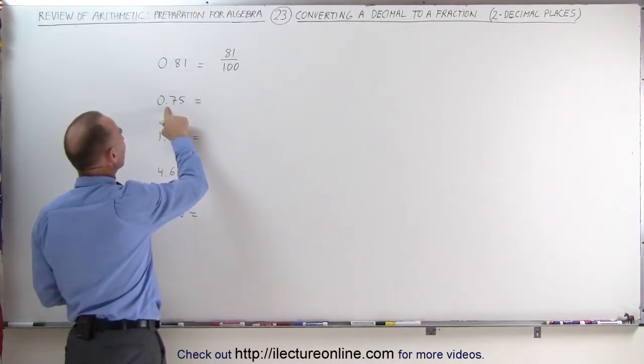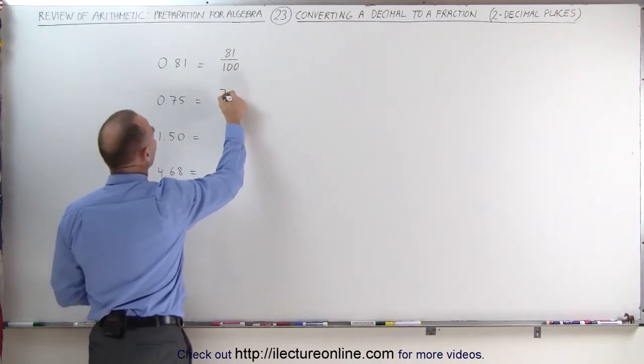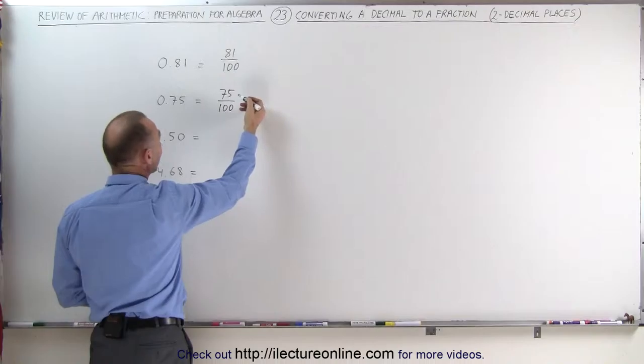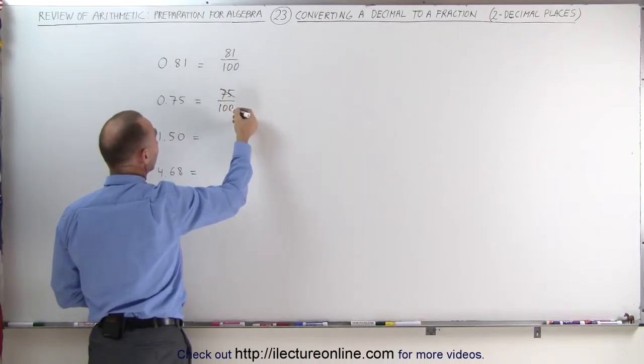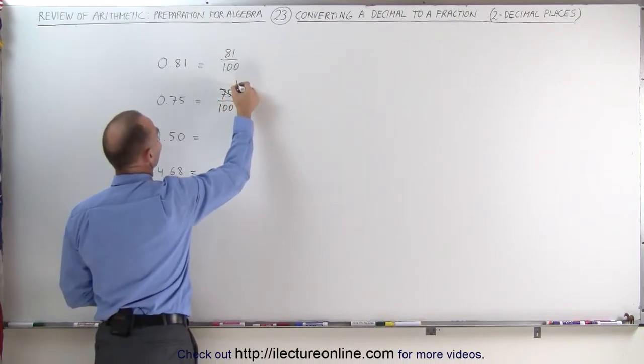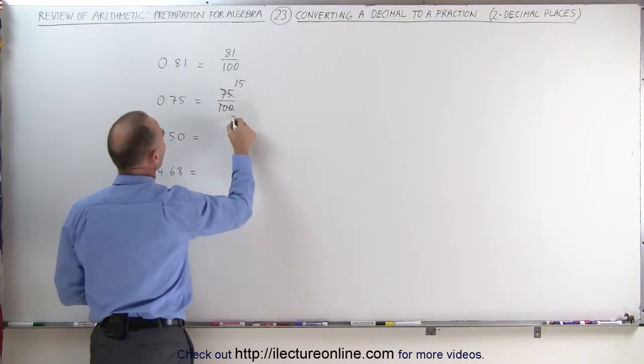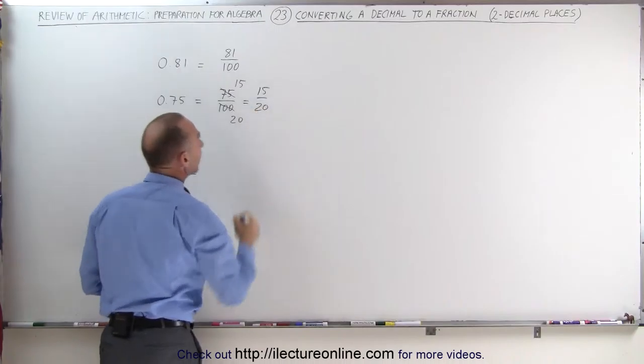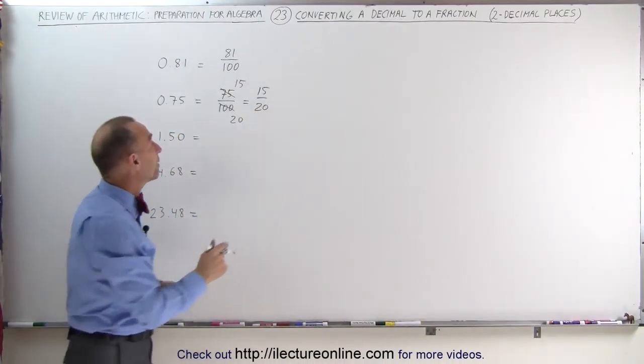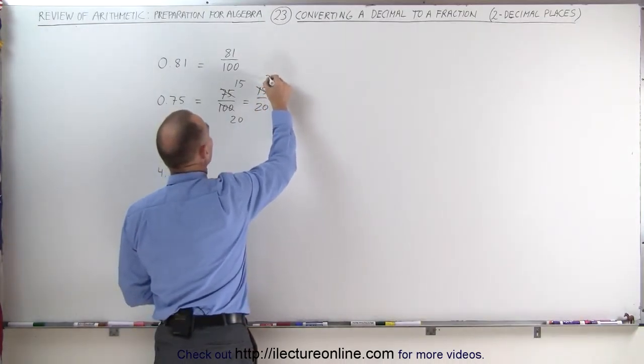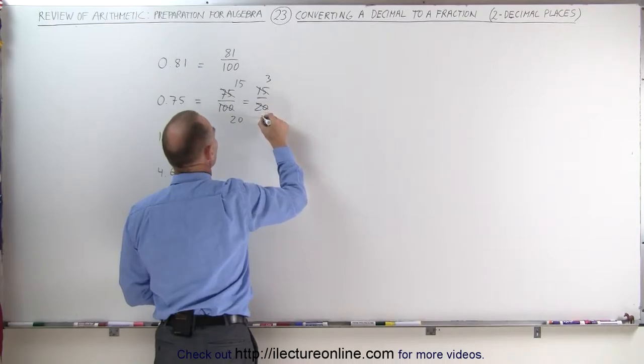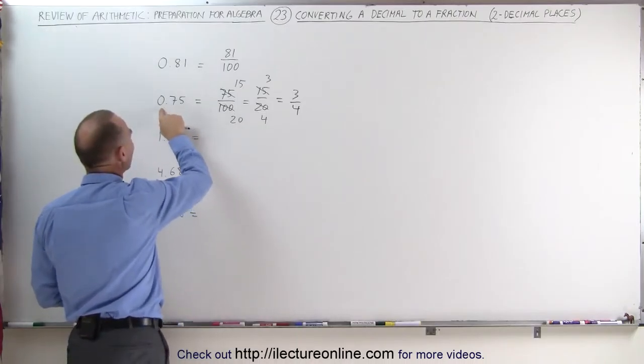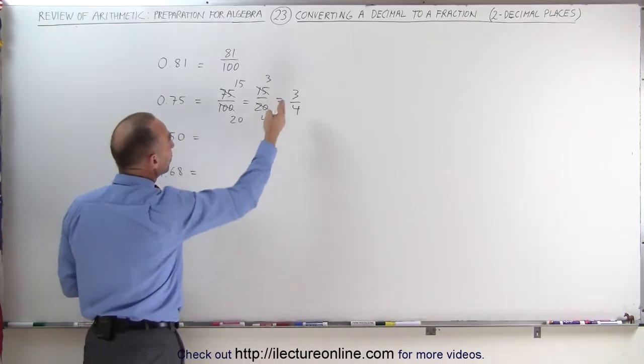On this example we can remove the decimal place and write it as 75 divided by 100. Now 75 can be divided by 5 just like 100. 75 divided by 5 is 15 and 100 divided by 5 is 20. This can be written as 15 divided by 20, and again they're both still divisible by 5. 15 divided by 5 is 3, 20 divided by 5 is 4. And so this becomes 3 fourths. In other words, 0.75 is the same as three quarters.